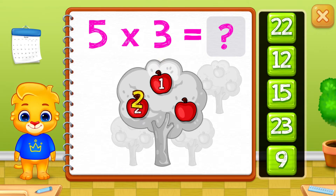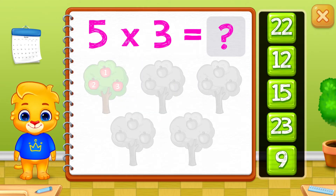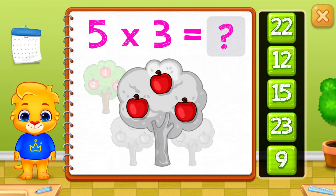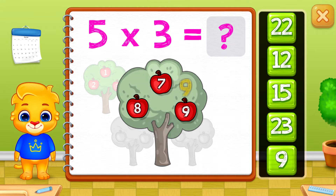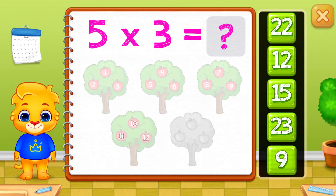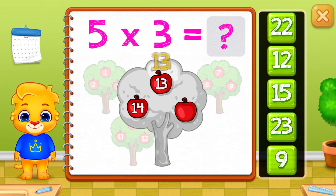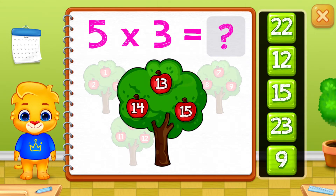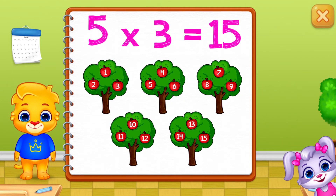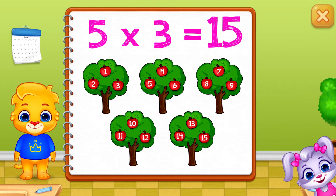1, 2, 3, 4, 5, 6, 7, 8, 9, 10, 11, 12, 13, 14, 15. 5 times 3 equals 15.